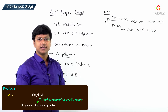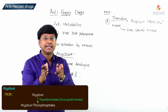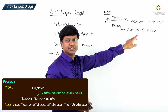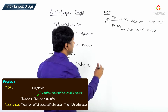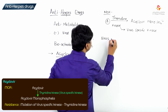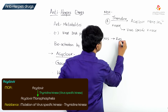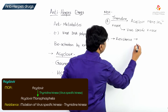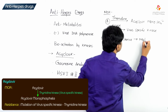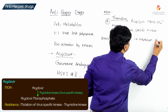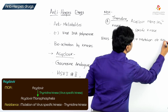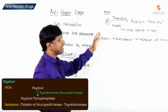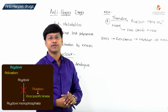Remember, the virus develops resistance due to mutation of this particular kinase. Once there is mutation of the kinase, acyclovir is not converted into acyclovir monophosphate.